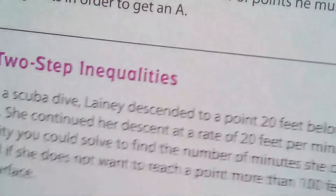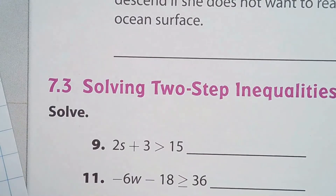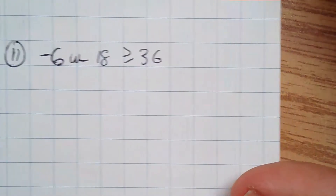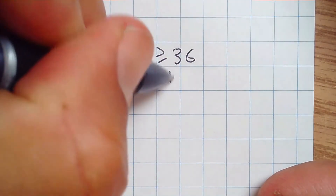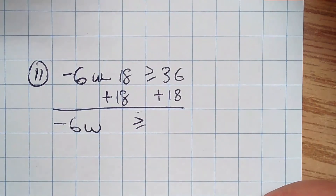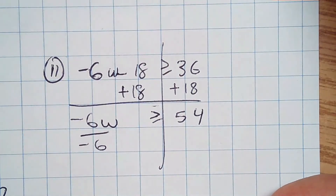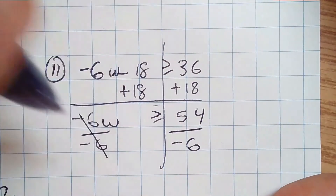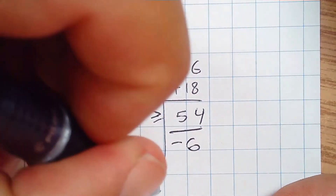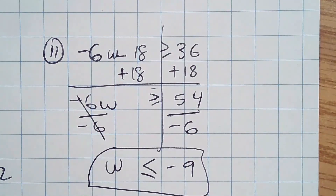Number 11: negative 6w minus 18 is greater than or equal to 36. I add 18 to both sides, giving negative 6w is greater than or equal to 54. Divide by negative 6 — these cancel — and since we're dividing by a negative, we switch the direction of the inequality. So w is less than or equal to negative 9.